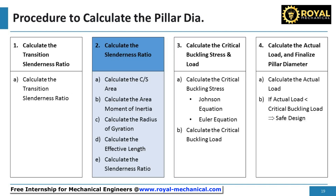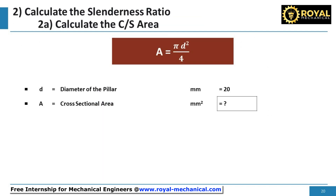Let's proceed to calculate the slenderness ratio. First, let's calculate the cross-section area of the pillar. The formula is: cross-section area is equal to pi times D squared divided by 4. Let's consider the diameter of the pillar as 20 millimeters — a minimum of 20 millimeters diameter is recommended for press tools. By substituting the value of diameter, the cross-section area of the pillar is 314.2 square millimeters.